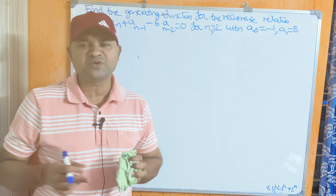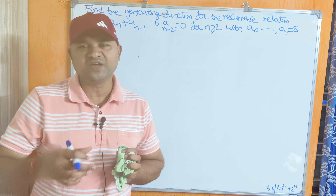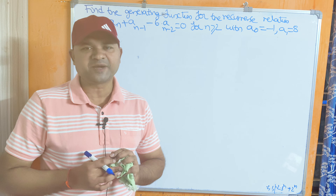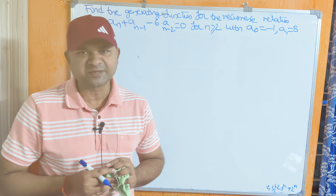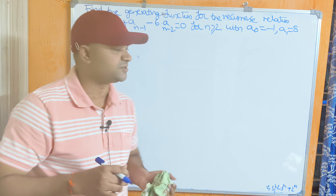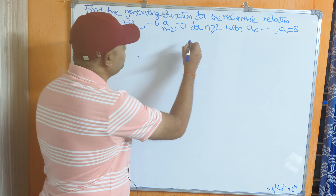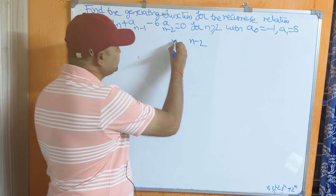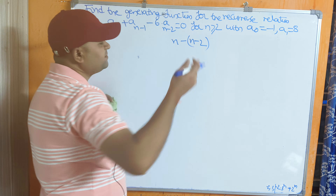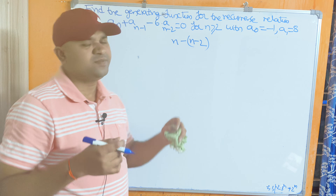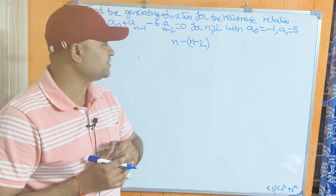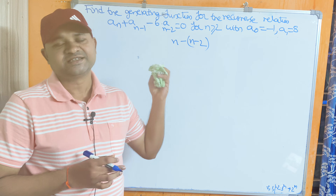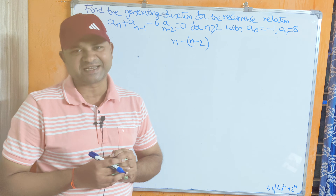First we have to determine the order of the recurrence relation. To determine the order, we subtract the minimum subscript from the maximum subscript. Here the minimum subscript is n-2 and the maximum is n. So n - (n-2) = 2. The given recurrence relation is a second order homogeneous recurrence relation.